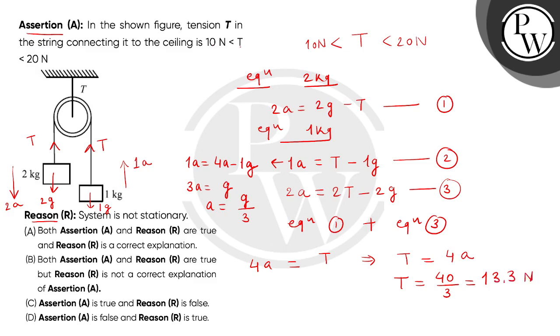So this assertion statement is true. Now if we check the reason, system is not stationary. System is not stationary means the system will move. So definitely the system is moving with acceleration 2a and 1a respectively.